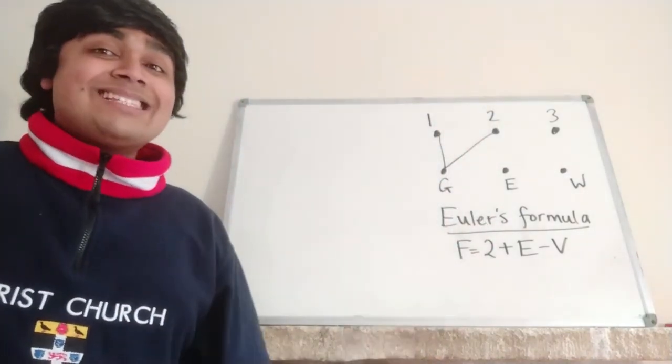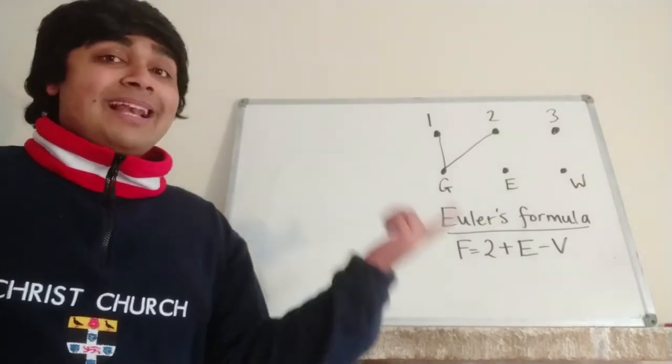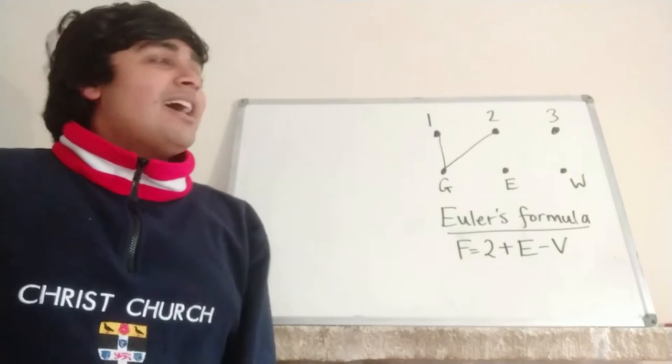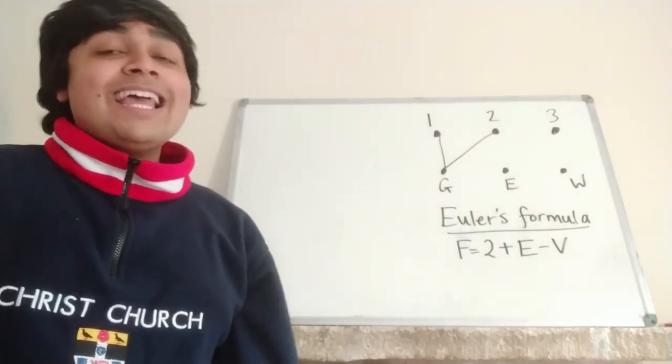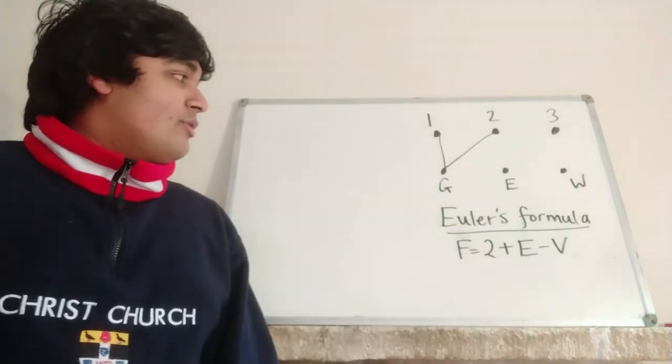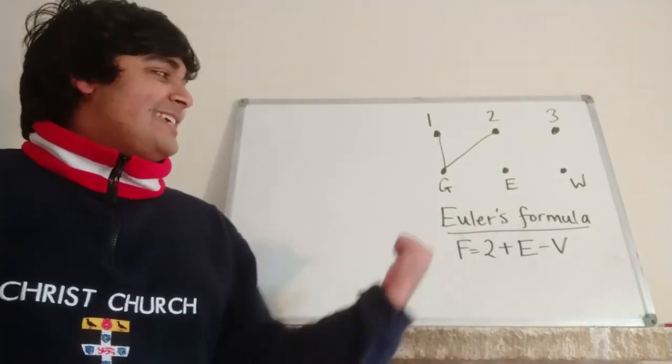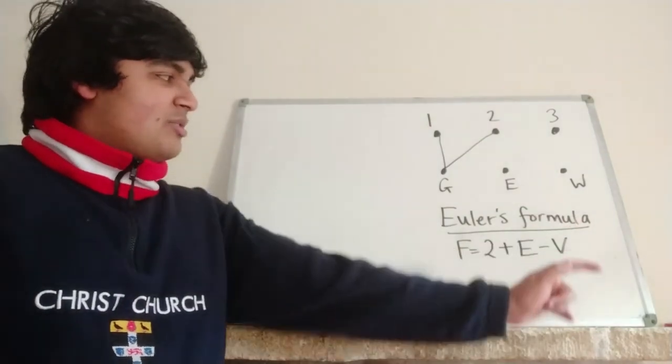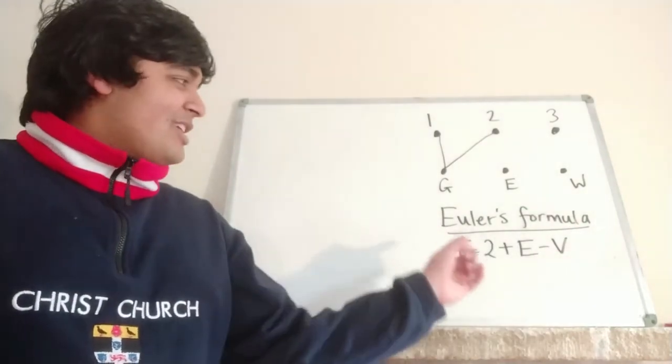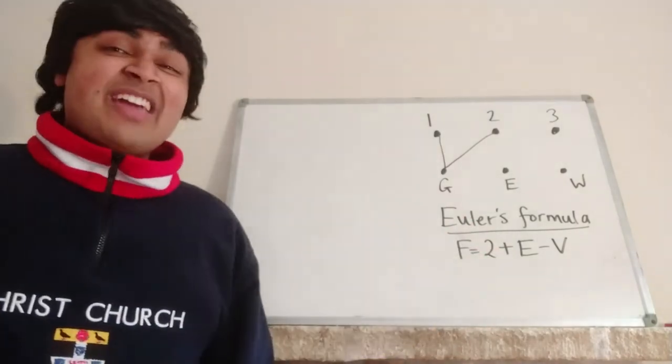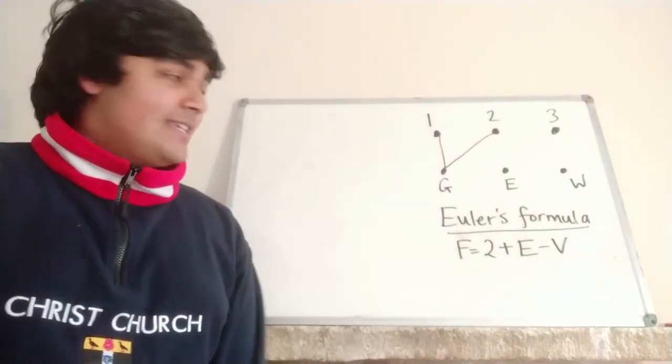Now what we want to do is see if this graph is planar, which basically means can I draw lines from each of these, which is what we want to do, to each of these, without any of the lines crossing. And I claim that the answer is no. And to do that, we're going to be using Euler's formula, which says that f equals two plus e minus v. Now, I'm not going to prove that in this video, but if you want to prove it, you just do it by induction. But let me just explain what each of the terms are first. f stands for faces, e stands for edges, and v stands for vertices.